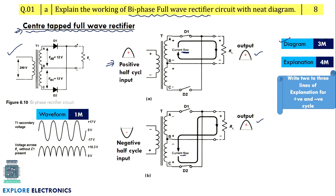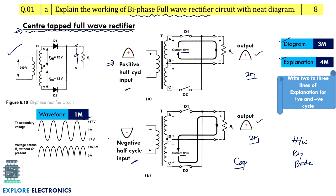We need to indicate the direction of current flow; this current flows through RL in the same direction, that is why output is available in both the positive and negative half cycles. These three diagrams carry three marks, the explanation is split as two marks each, and the waveform carries one mark — don't miss writing the waveform. This approach applies for half wave, biphase, or bridge rectifier questions. If the question includes a capacitor filter, include one more capacitor and show the charged output waveform.